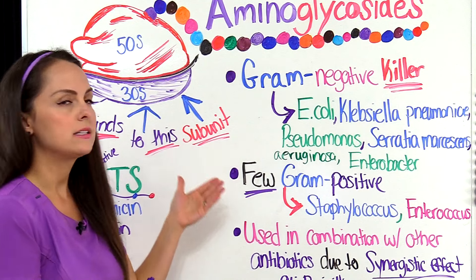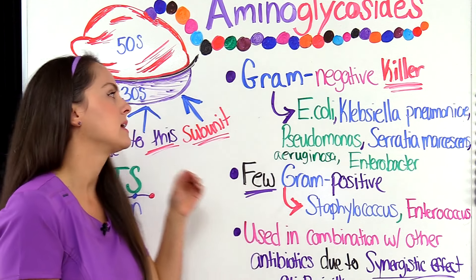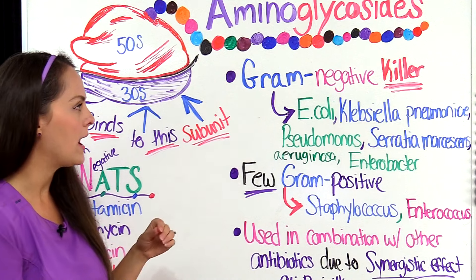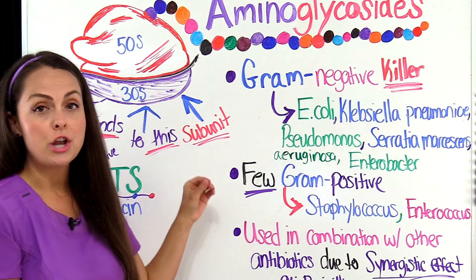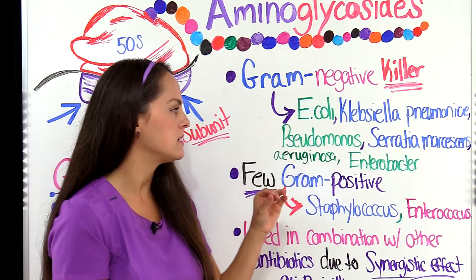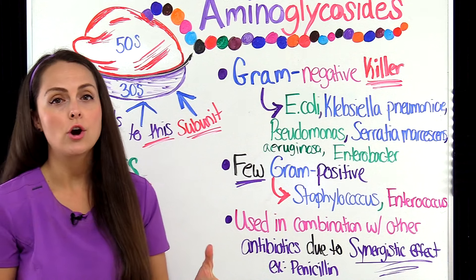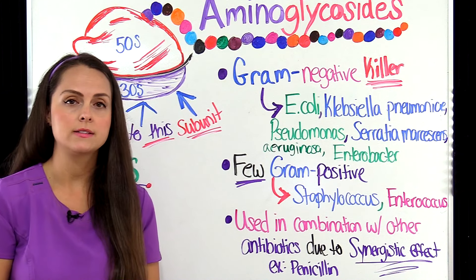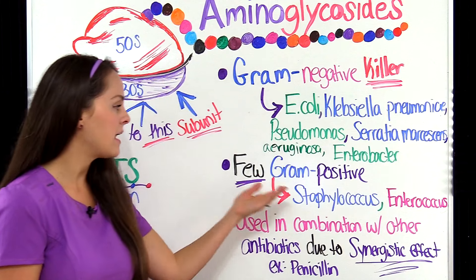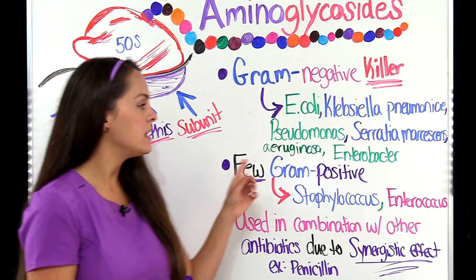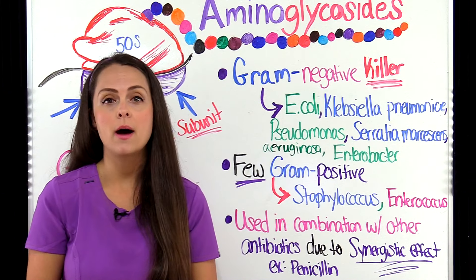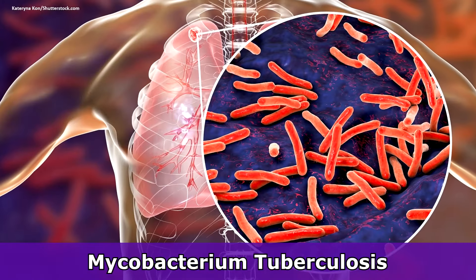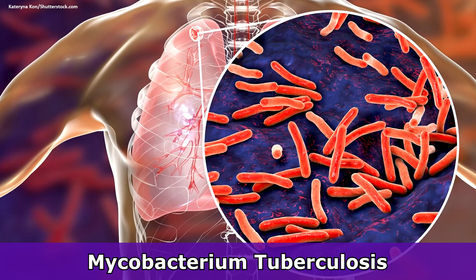So what gram-negative bacteria do aminoglycosides target? Well, they target E. coli, Klebsiella pneumoniae, Pseudomonas aeruginosa, Serratia marcescens, and Enterobacter. Now they're not really helpful with targeting gram-positive microorganisms, but they can kill a few such as Staphylococcus aureus and Enterococcus. Furthermore, aminoglycosides can target mycobacteria infections such as Mycobacterium tuberculosis.